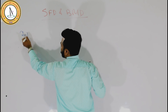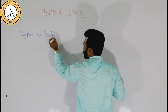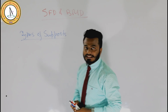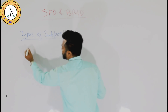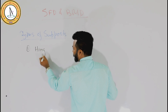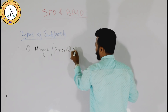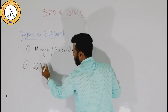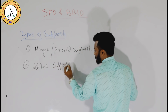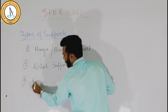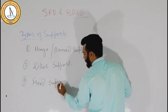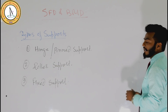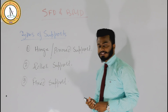Now let's explain the types of supports. In the civil field, we mainly use three types of support: number one is the hinge or pin support, number two is the roller support, and number three is the fixed support. These three types of support are normally used in the civil field. Let me show you how these supports look and what is the importance of each particular kind of support.